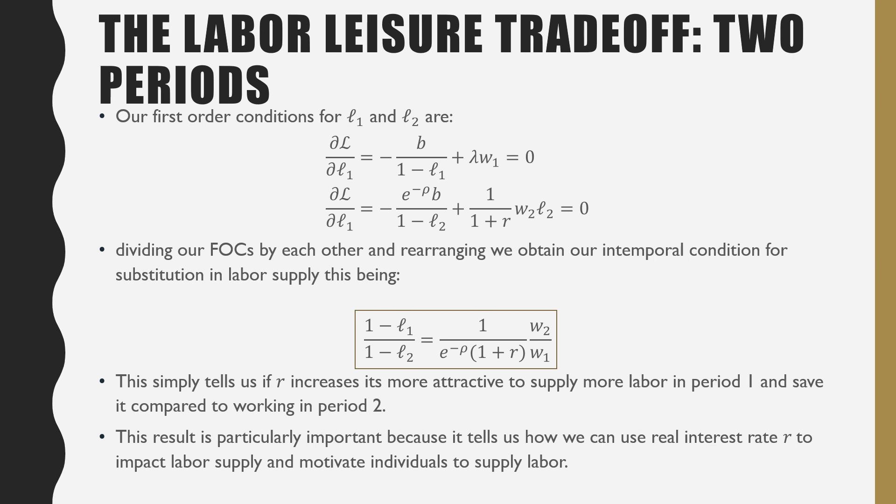we obtain our intertemporal condition for substitution of labor supply. This being this equation boxed in below, which is 1 minus L1 all over 1 minus L2 is equal to 1 over E raised to the power of negative rho times 1 plus R times W2 over W1.